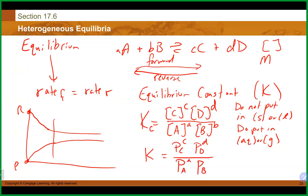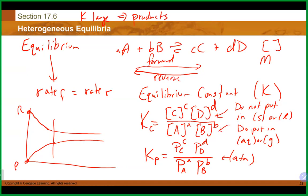If you have an equilibrium involving all gases, you can write an equilibrium constant expression using partial pressures rather than concentrations — products over reactants, each raised to the coefficient. This is called Kp, where the units are typically atmospheres.